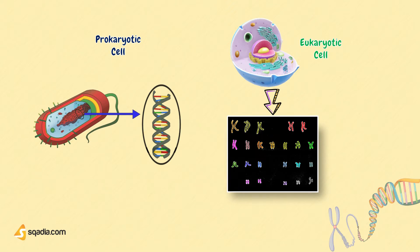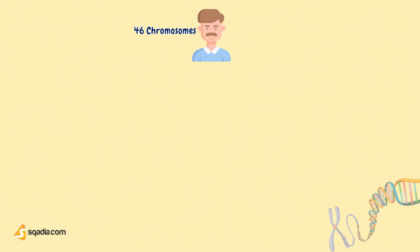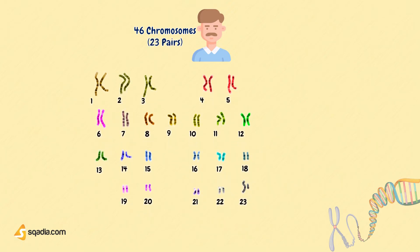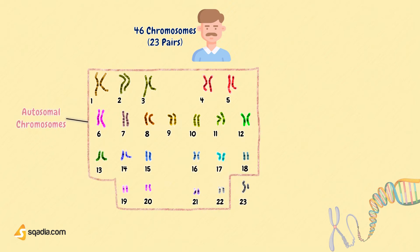All eukaryotes have chromosomes with a similar basic structure, but the sizes and numbers of chromosomes vary greatly between different species. Human beings contain a total of 46 chromosomes in each cell, organized into pairs, with each pair containing one chromosome from each parent. That means 23 pairs of chromosomes, where 22 pairs are called the autosomal chromosomes. Both males and females have the same 22 pairs of autosomal chromosomes.